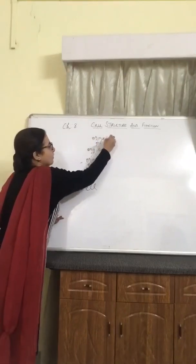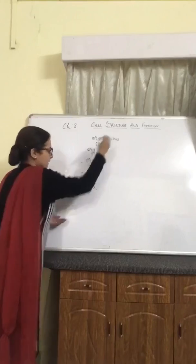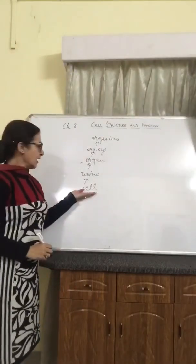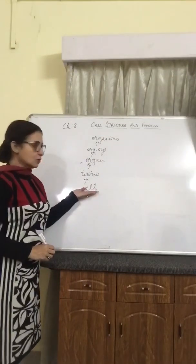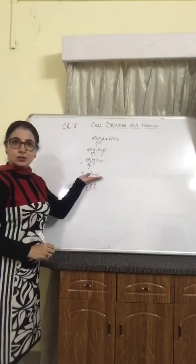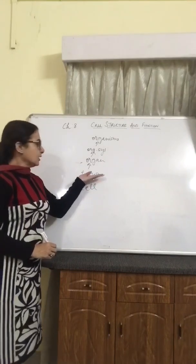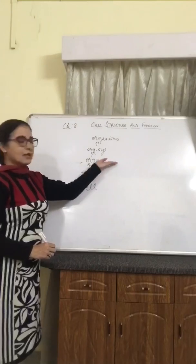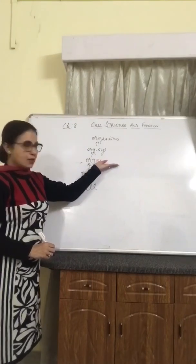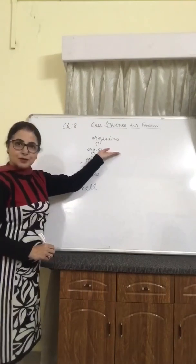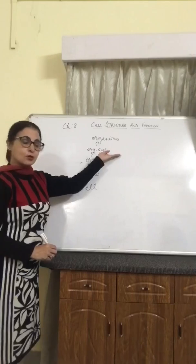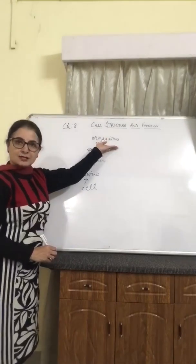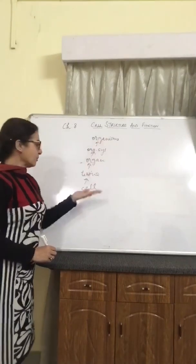A simple way to remember this: a cell can be compared to the brick of a house. These bricks combine together to form what is known as a wall, or the tissue. These tissues, or the wall, are what make a room. A functional room — maybe a kitchen or a bedroom — is what forms the house, which is known as the organism.